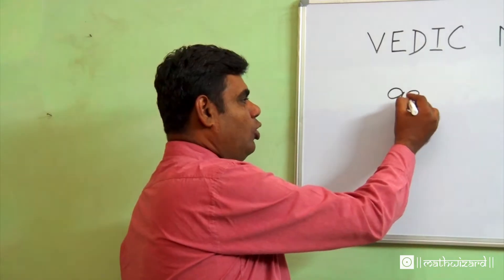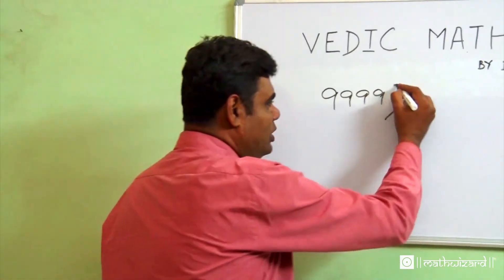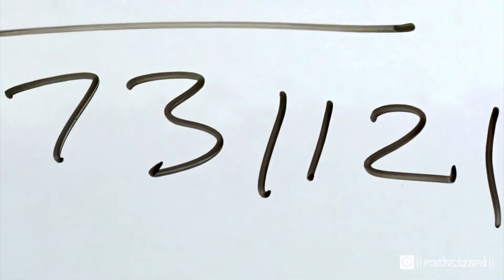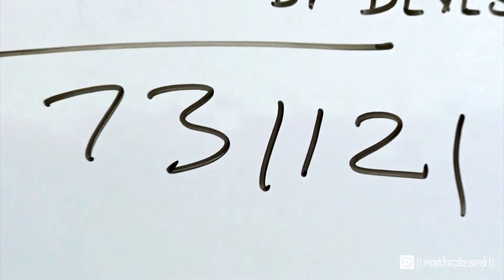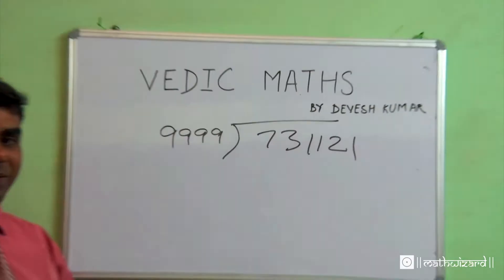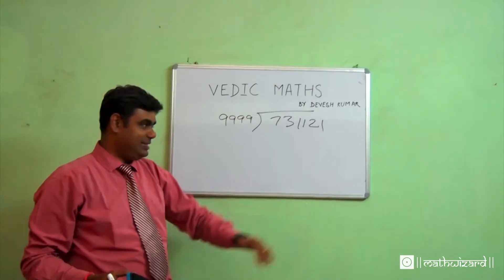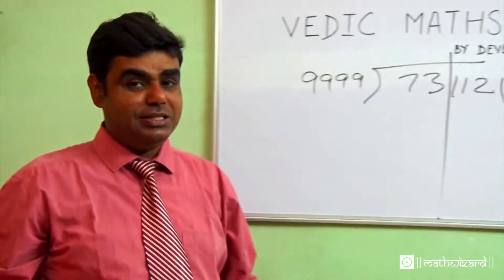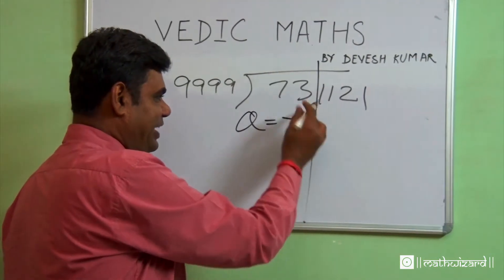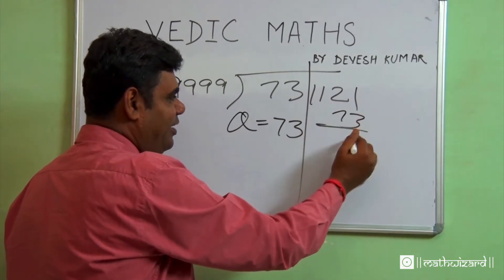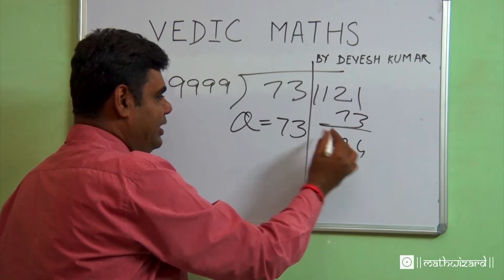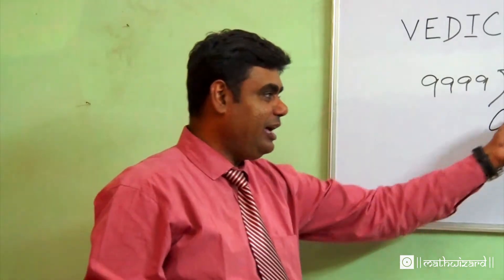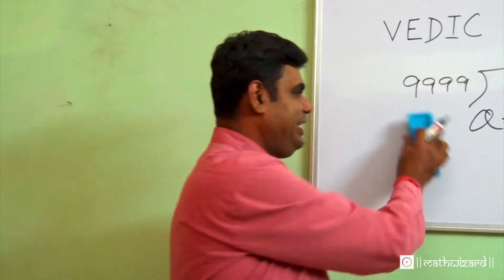Have a look. We all know division. The school's division — if I were to ask you to solve this, I'm very confident it will take you lots of time. But if I were to use this, it triggers with the number 999. I am using Vedic Maths. How many 9's are there? 4. I remove 4 digits — my answer is over. My quotient is 73. If I add the 73 here, I get my remainder. This is my quotient, this is my remainder. If someone sees, they'll be thinking how you did it. But it's Vedic Maths — it's very easy.